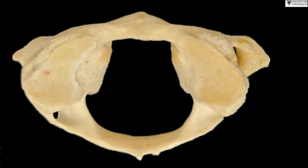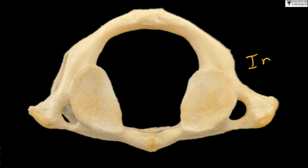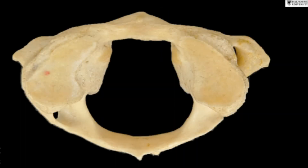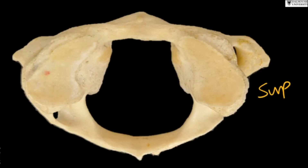This is the atlas vertebra. Obviously it has no body — the body has been given to the axis vertebra and is represented as the odontoid process. This is an inferior view of the atlas, and this one is a superior view. How do I know? Is it just guessing or am I using certain features here?